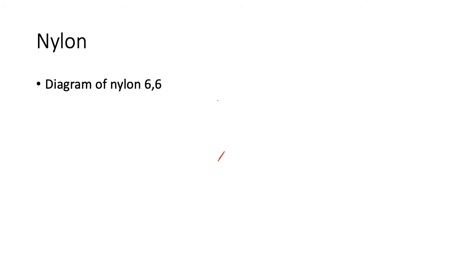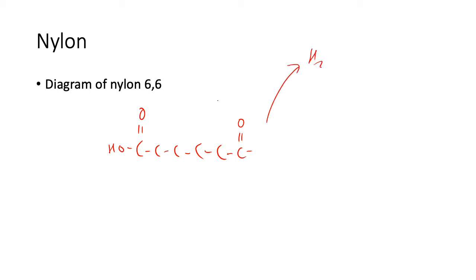Let's draw a diagram of nylon 6-6. You have the dicarboxylic acid — one, two, three, four, five, six carbons — and the diamine. You should recognize that when the amine comes along, the OH is removed to form water, and one of the hydrogens on the amine stays. Then there's the rest of the carbon chain with another amine. For every bond that's formed, you get a water molecule formed, and the result is going to have an amide link in the middle, repeating units of that.